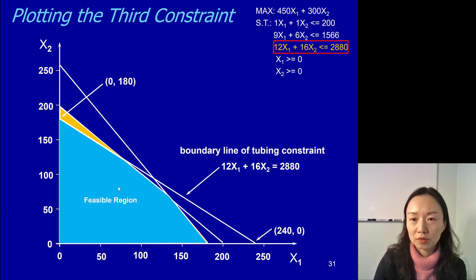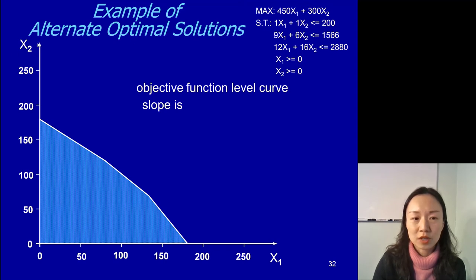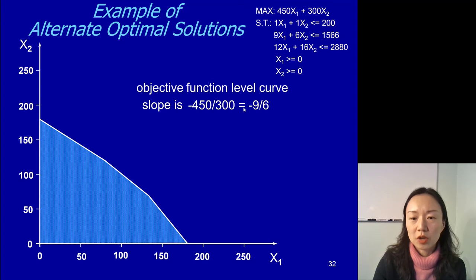Now we look at the objective function. We now have the feasible region. The two coefficients of the objective function give us the slope of our level curves. We make the objective function equal to z, and because x2 is on the y-axis, we leave x2 on one side and move x1 to the other side and divide by 300. So our slope is negative 450 over — we move x1 to the other side and divide by 300 — which reduces to negative 9 over 6.